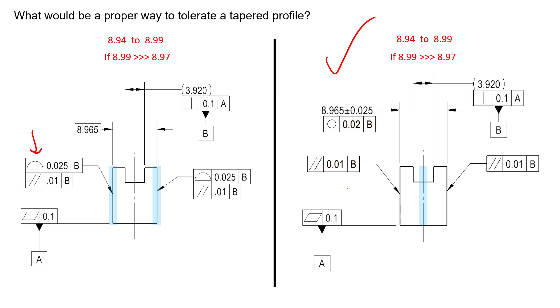We're defining the location of this surface and this surface with profile of the surface. Each one is allowing a deviation total of 25 microns, meaning we can deviate out half that value and out half that value. We can grow in width by 25 microns or shrink by 25 microns. Our nominal is 8.965, just like we saw before, with a plus or minus equivalent of 25 microns.